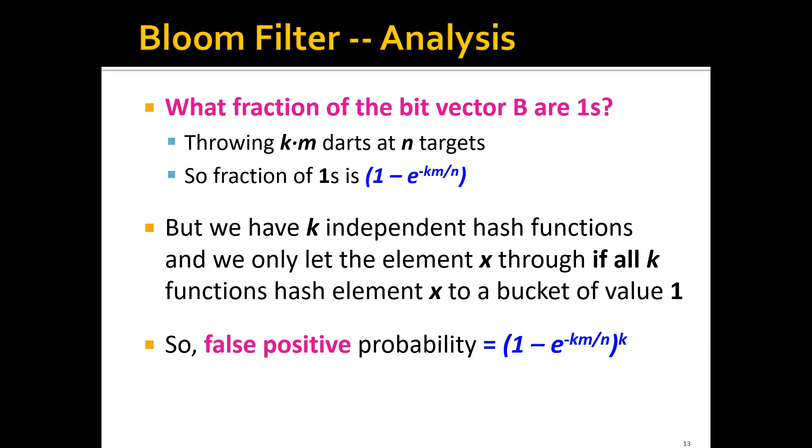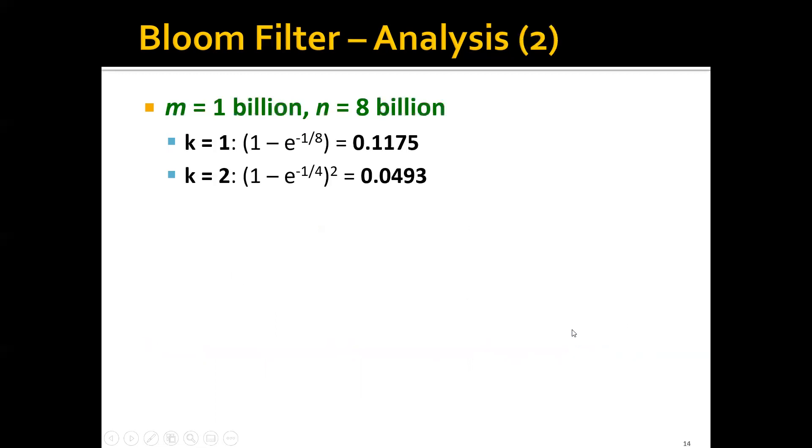Now you might be wondering, is this number really smaller than when k equals 1? Let's look at a concrete example. Let's say that we have m equals 1 billion items and a bit array of length 8 billion. The original solution before Bloom filter used only one hash function, and the false positive rate would be 0.1175. But if you have two independent hash functions, then the false positive rate will decrease significantly to 0.0493. You can see that it's actually a lot smaller.